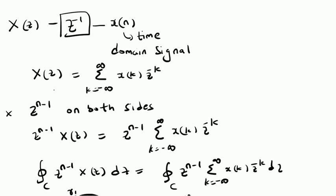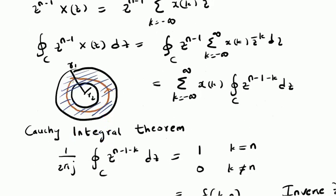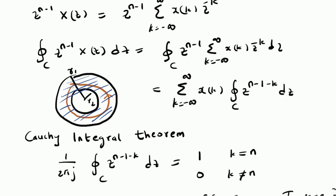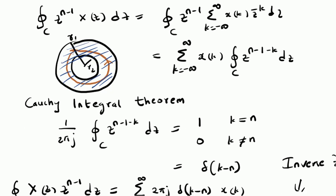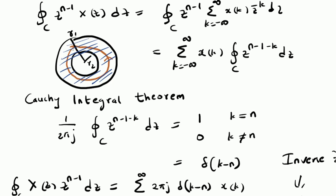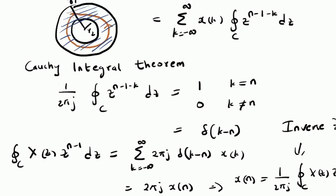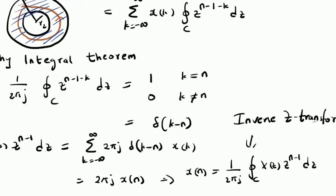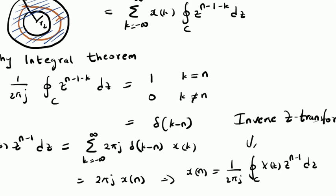To summarize, we have derived the inverse Z-transform to extract the signal X of n from a given Z-transform X of Z. We used the Cauchy Integral Theorem, which states that 1 over 2 pi j times the integral of Z power n minus 1 minus k over a closed contour C equals the unit sample function delta of k minus n. We have shown that X of n equals this closed contour integral of X of Z times Z power n minus 1 divided by 2 pi j. Thanks for watching.